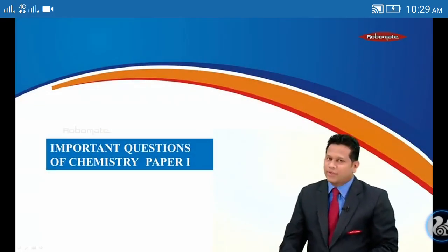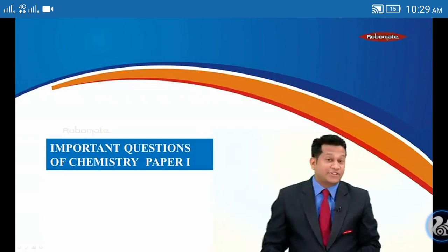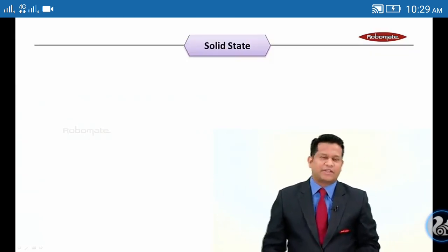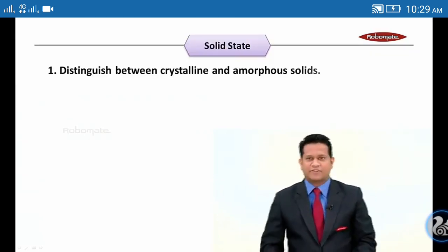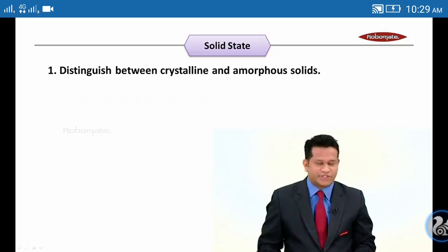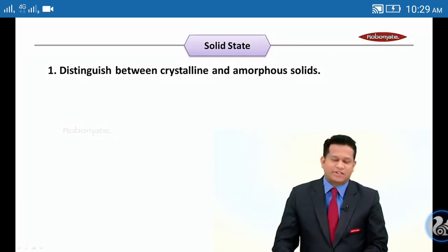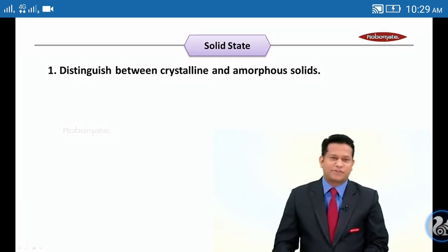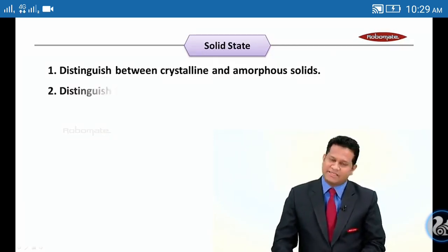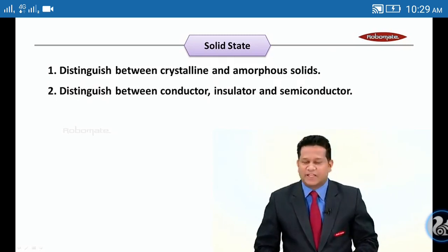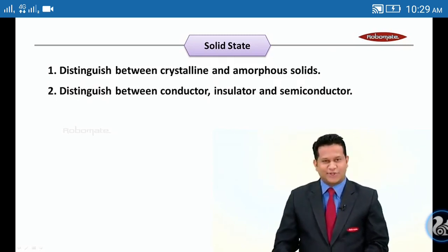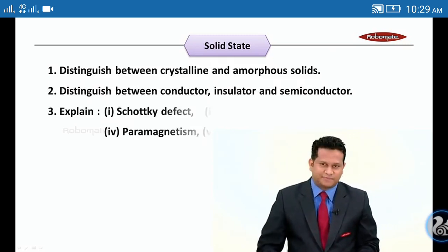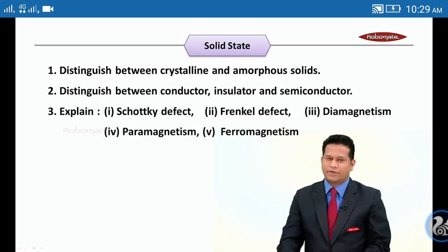Let's discuss some important questions of Chemistry Paper 1. The first chapter is Solid State. The first important question: distinguish between crystalline and amorphous solids. The second one: distinguish between conductor, insulator, and semiconductor.